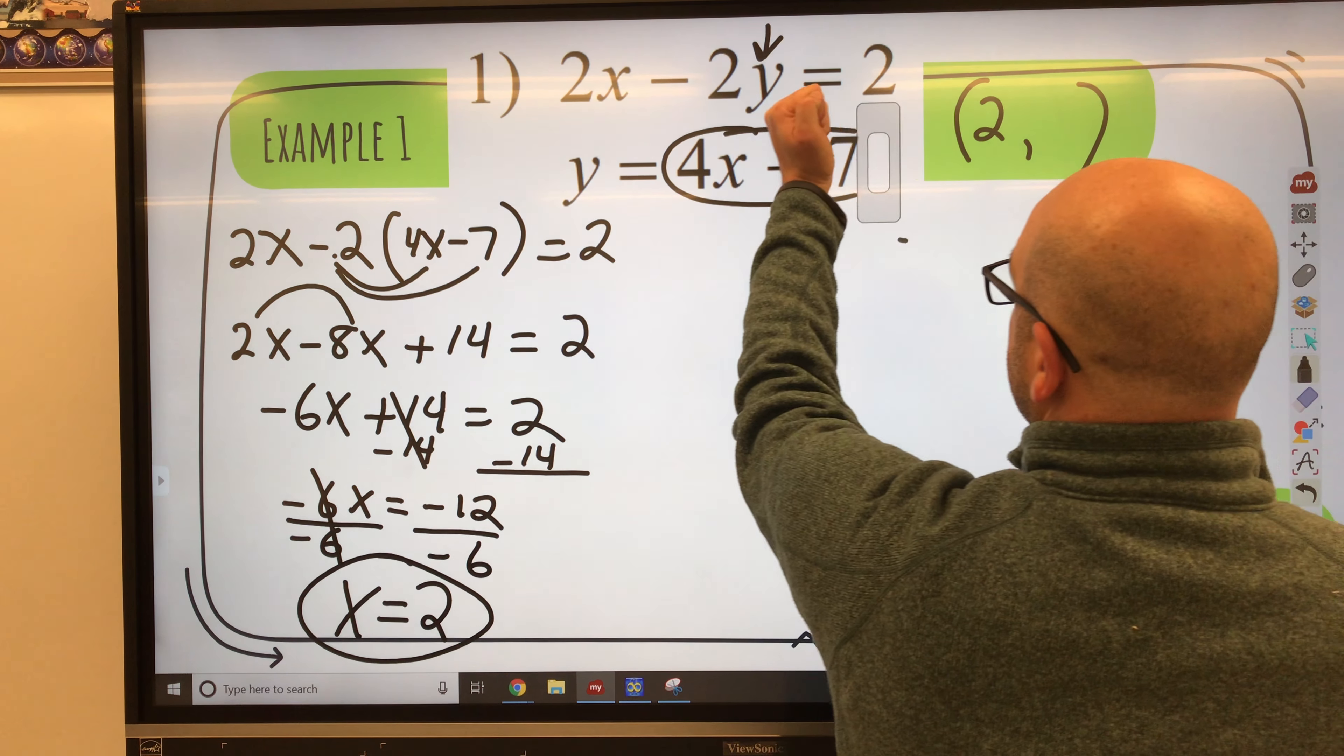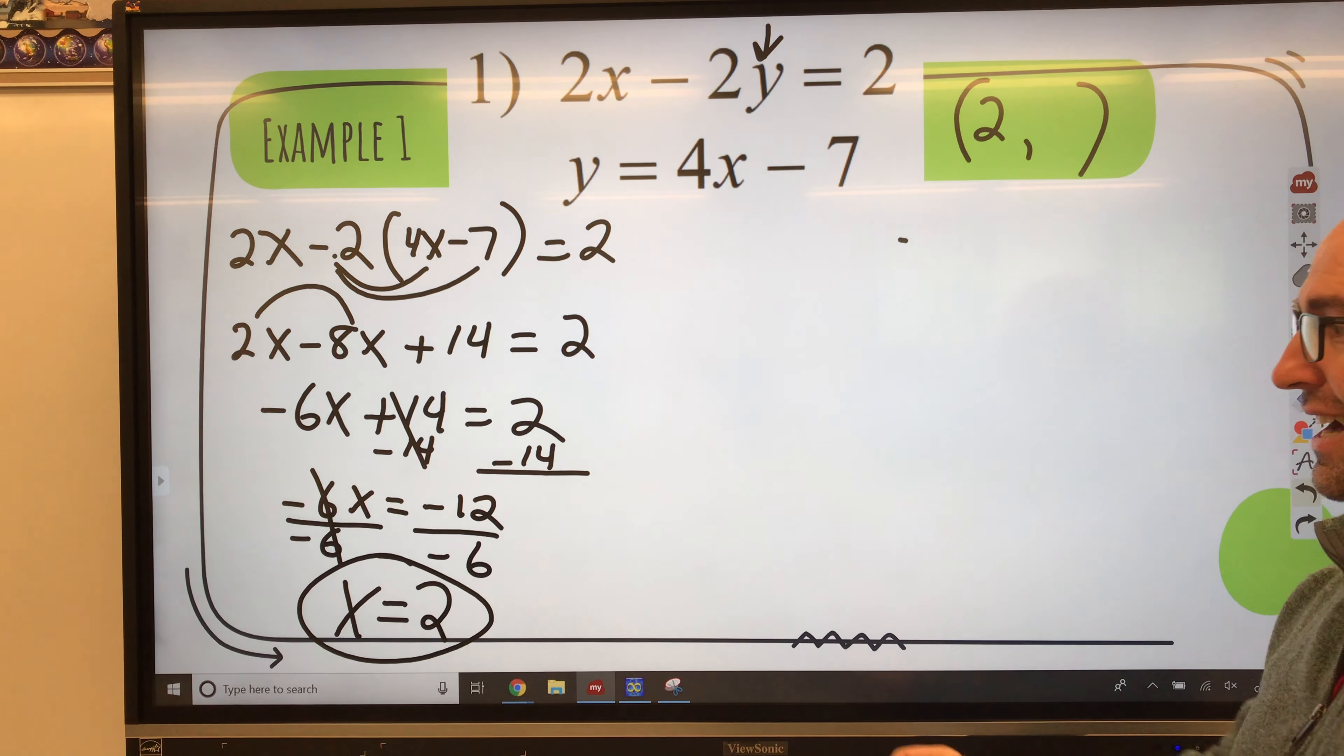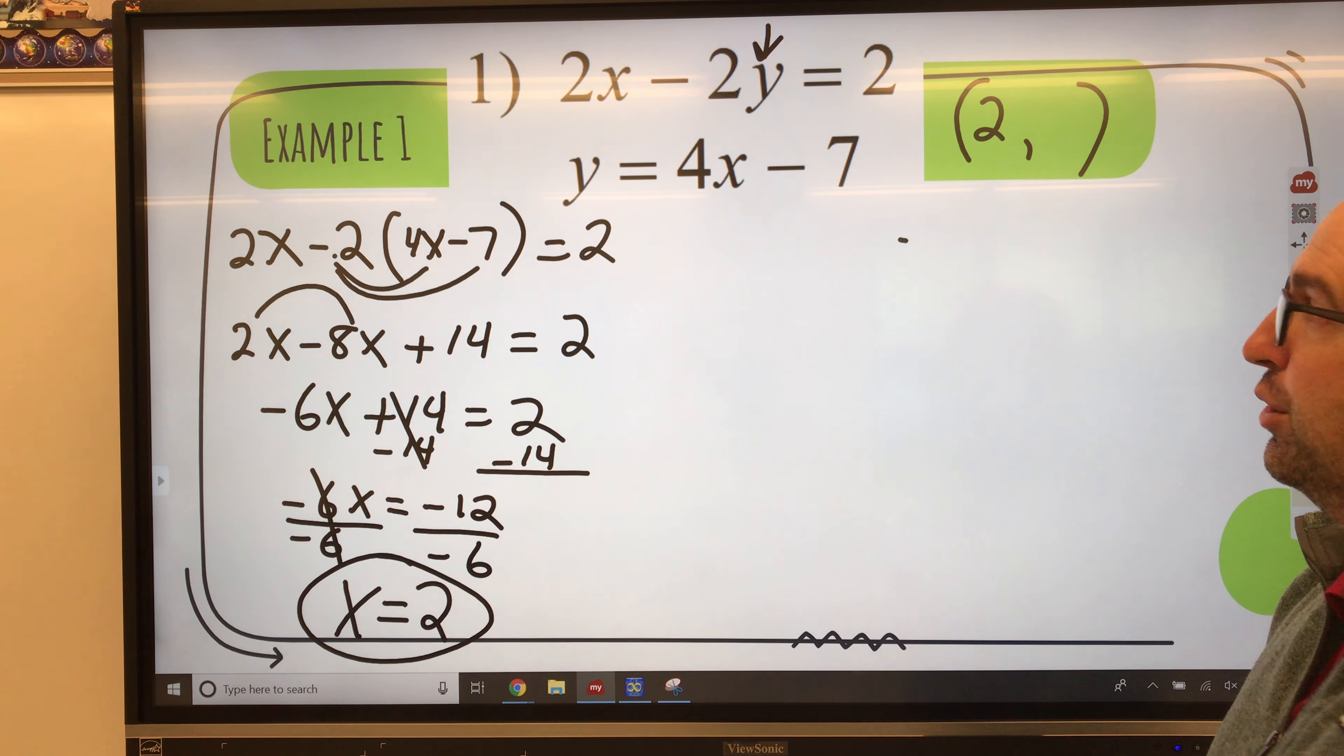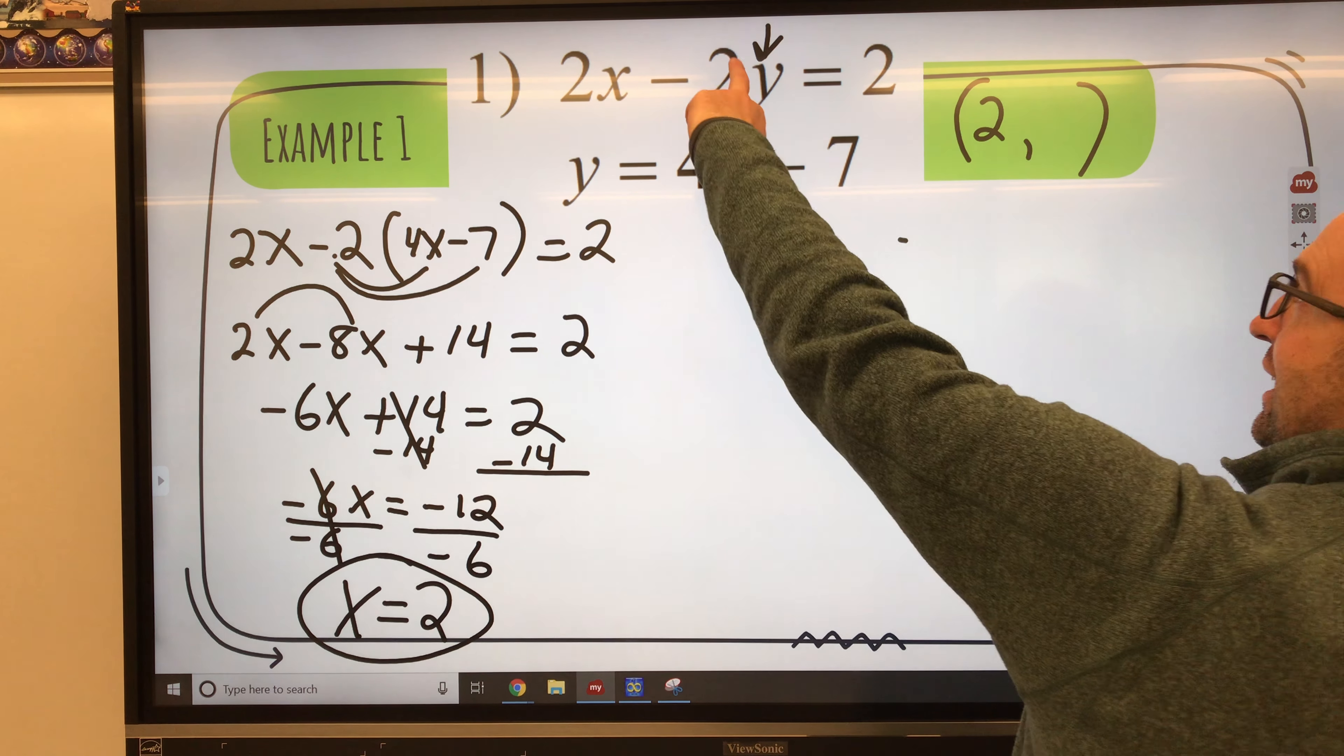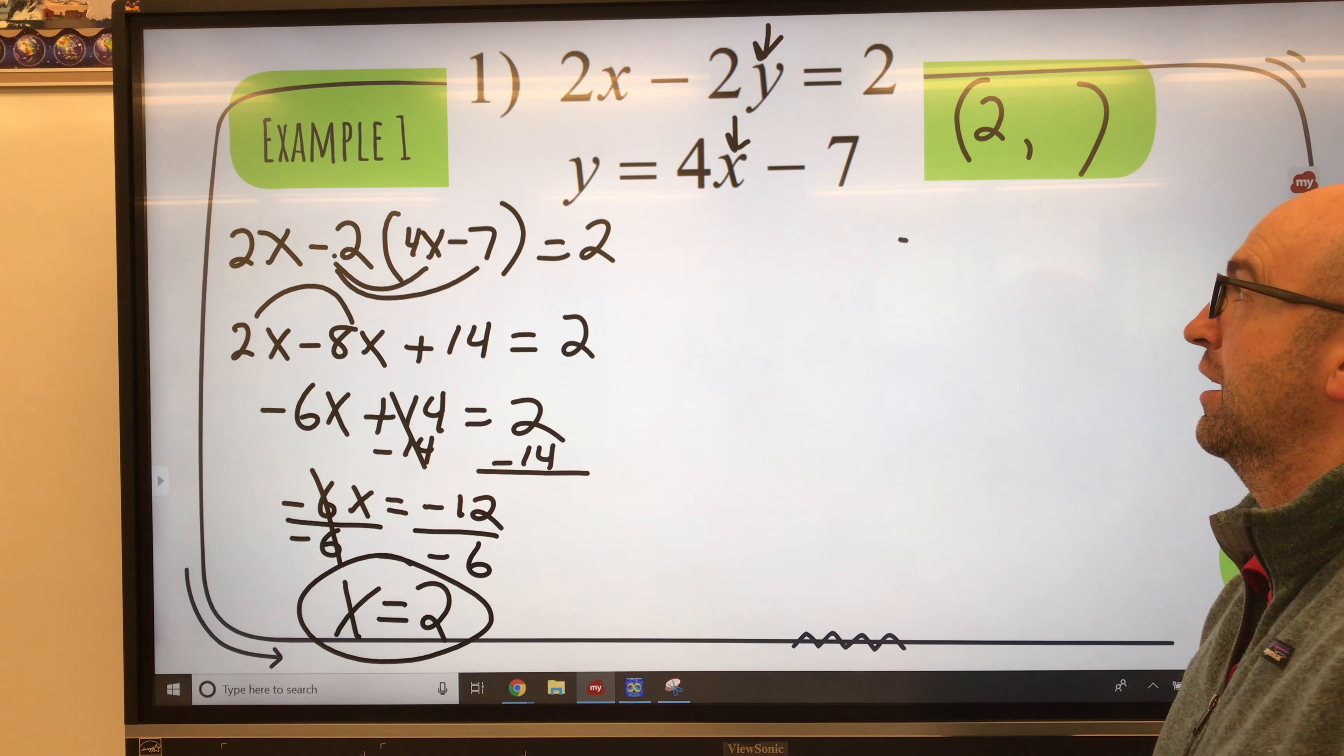Now what I'm going to do is I'm going to take that x value of 2. And I'm going to put that value of 2 in for x right there in this equation. Now you can plug it into either one. I find it easier to do the one that's solved for y.